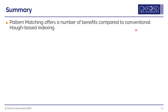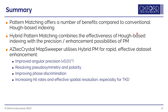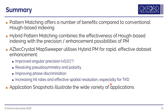To summarize: pattern matching clearly offers lots of benefits compared to conventional Hough-based indexing, but we believe that hybrid pattern matching is the most useful of all, combining the effectiveness of Hough-based indexing with all of the enhancement possibilities from pattern matching. In Aztec Crystal MapSweeper, we're utilizing hybrid pattern matching for many different ways to enhance datasets, including improving angular precision, resolving pseudosymmetry and polarity, improving phase discrimination, or increasing hit rates and improving effective spatial resolution, especially for TKD datasets. The brief application snapshots given should illustrate the wide variety of applications in this space.